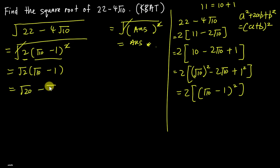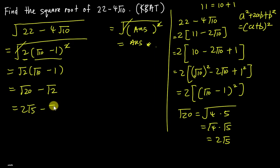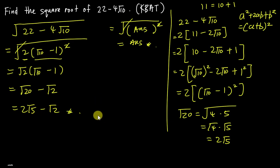I'll expand this: √2 × √10 = √20 and √2 × (-1) = -√2. Simplifying √20: since 20 = 4 × 5, we get √4 × √5 = 2√5. So the final answer is 2√5 - √2. That means √(22 - 4√10) = 2√5 - √2.